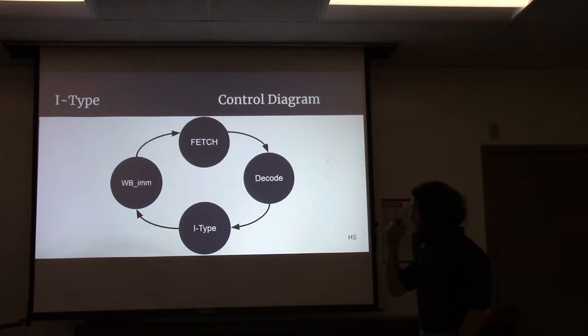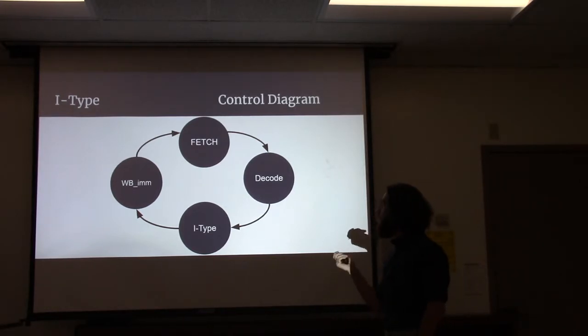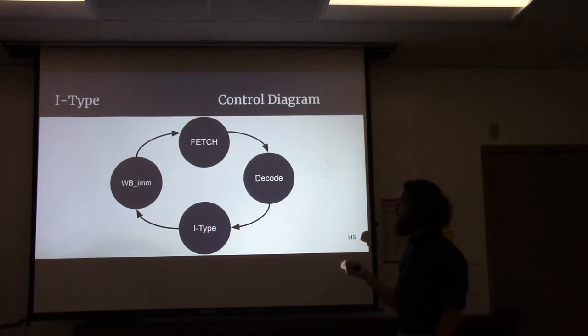For the I-type instruction, it essentially starts off the same. We start off with the fetch instruction, go to decode, perform the I-type instruction, and then we do a write back immediate, rather than a write back from the ALU out.